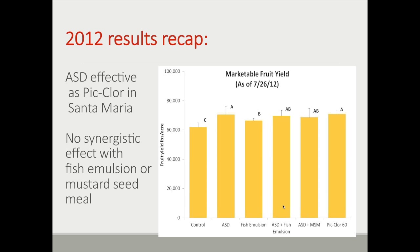This shows data from a farm in Santa Maria — a very high-yielding field with no obvious disease. Yields were highest in the ASD treatment with nine tons per acre of rice bran and the Pic-Clor 60 fumigant treatment. Other treatments — fish emulsion applied through drip tape, ASD combined with fish emulsion, or ASD with rice bran and mustard seed meal — showed no benefit of adding fish emulsion or mustard seed meal to the rice bran.